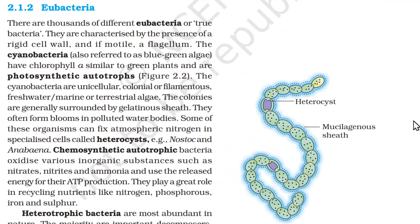2.1.2 Eubacteria. There are thousands of different eubacteria or true bacteria. They are characterized by the presence of a rigid cell wall and, if motile, a flagellum. The cyanobacteria, also referred to as blue-green algae, have chlorophyll A similar to green plants and are photosynthetic autotrophs. They are unicellular, colonial, or filamentous, and found in freshwater, marine, or terrestrial environments. Colonies are generally surrounded by a gelatinous sheath and often form blooms in polluted water bodies. Some can fix atmospheric nitrogen in specialized cells called heterocysts — for example, Nostoc and Anabaena.